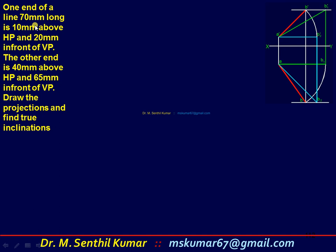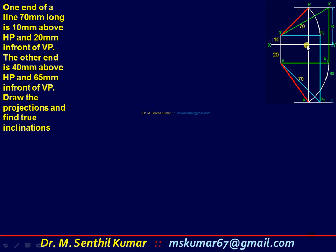After drawing the dummy picture in a corner of the drawing sheet, transfer the values from the given question onto it. The true length is 70, so both sides show 70. Point A is 10 above HP and 20 in front of VP; the other end is 40 above HP and 65 in front of VP. From this, A-dash and A can be marked easily without any difficulty.